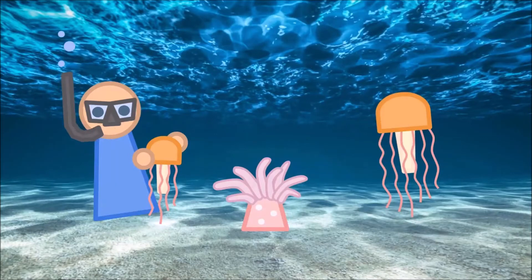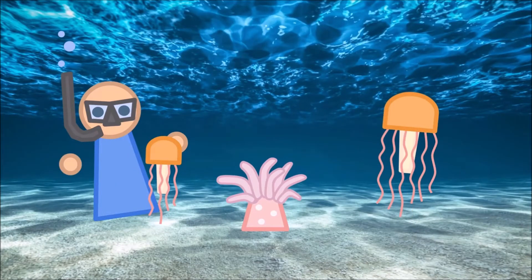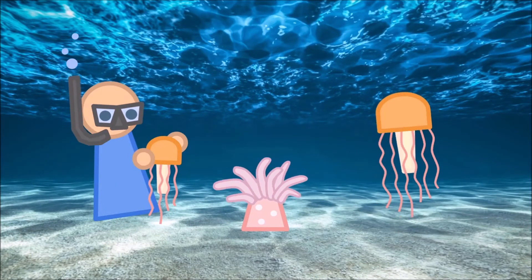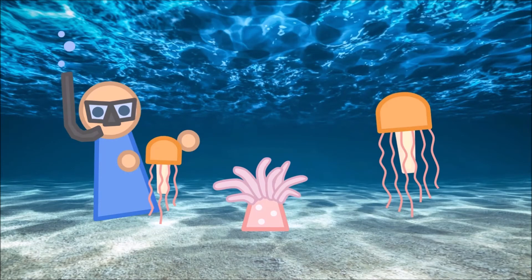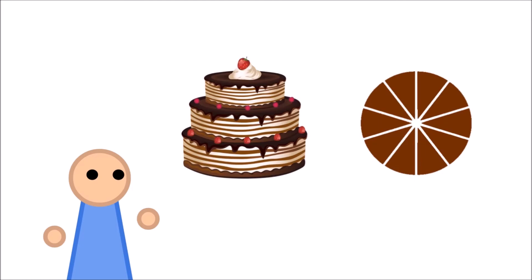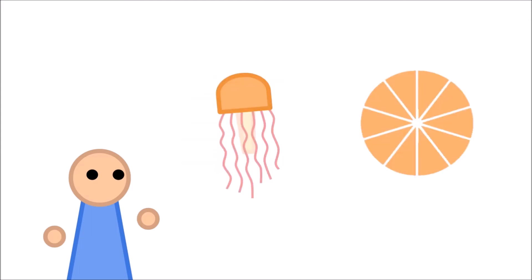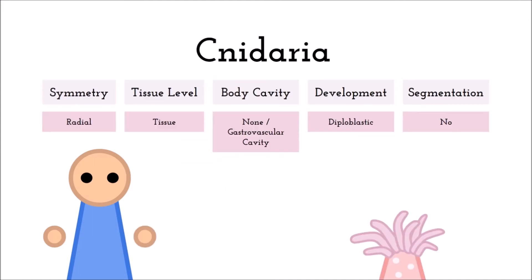As for body cavity, they do not possess one, as it would require them to be triploblastic, but our jelly buddies are only diplo. Although, like porifera, they do have a space that mimics a body cavity, the gastrovascular cavity. Another big step made by the cnidarians is their radial symmetry. Imagine cutting a cake, now imagine cutting a jellyfish the same way, top to bottom, oral to aboral.